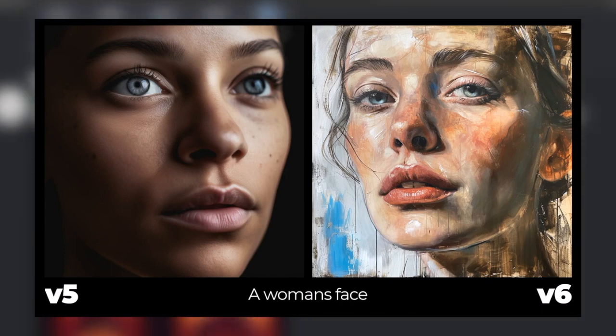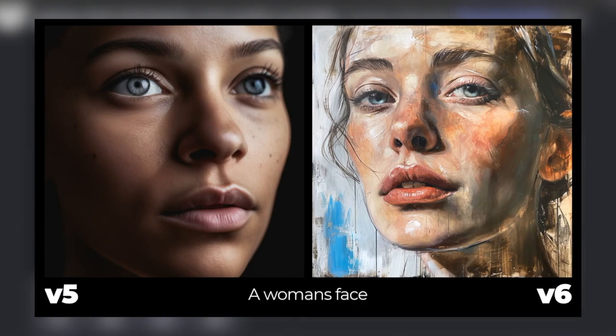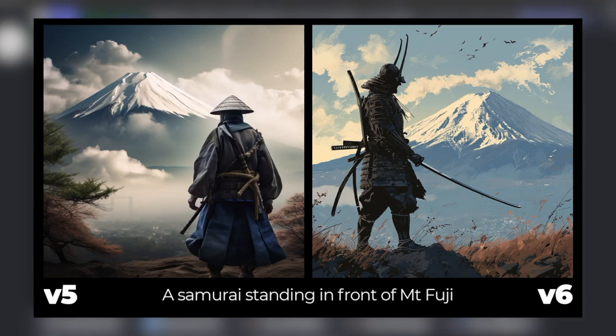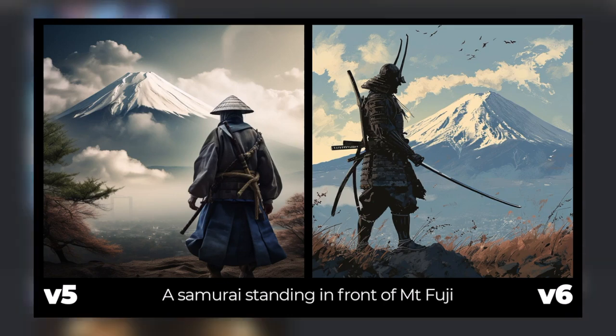This is where the opinionated nature of version 6 changes things a bit, and I would probably need to go to Style Raw if I want to get a photo of a woman's face. The samurai standing in front of Mount Fuji — once again, more of a photo on the left, a little bit more artistic on the right. One thing I noticed is that he's actually holding his sword properly to a degree. The only difference is he's got a whole bunch of other things coming out of his back. But stylistically, I don't think there's much of an improvement, just a difference.